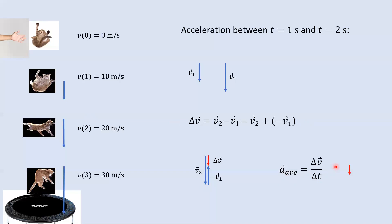Finding delta v isn't enough — if you want the acceleration vector, you'd have to divide by delta t. It's happenstance that in this example the time interval is one second, so dividing by one doesn't change the length of the vector. Finding the direction of the change in velocity is basically the same as finding the acceleration vector. The larger the change in velocity, the longer the acceleration vector. As the direction of delta v changes, the direction of the acceleration changes.